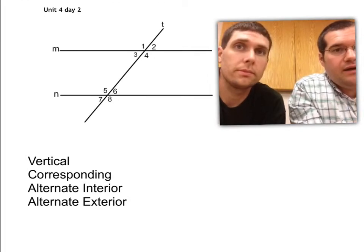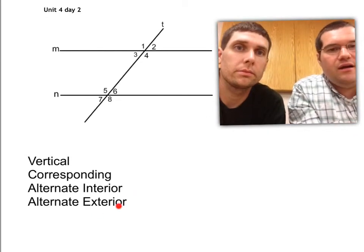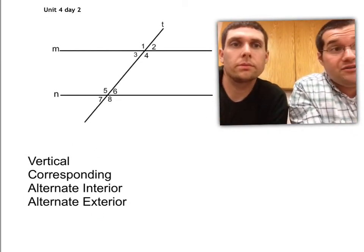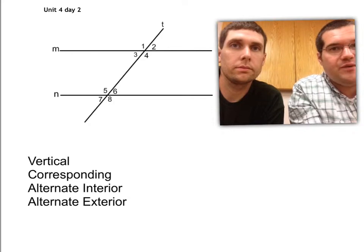The four angle pairs that we're going to be discussing today are vertical, corresponding, alternate interior, and alternate exterior. These are our congruent angle pairs. All these angle pairs are essentially going to be the same measurement.